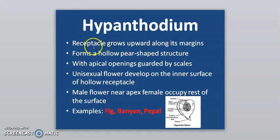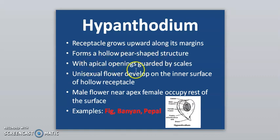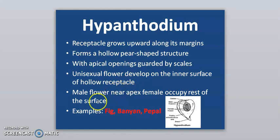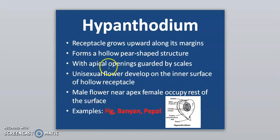In hypanthodium, the receptacle grows upward along its margins to form a hollow pear-shaped structure with apical openings guarded by scales. Unisexual flowers develop on the inner surface of the hollow receptacle — male flowers near the apex and female flowers occupying the rest of the surface. Example is fig, banyan, and peepal.